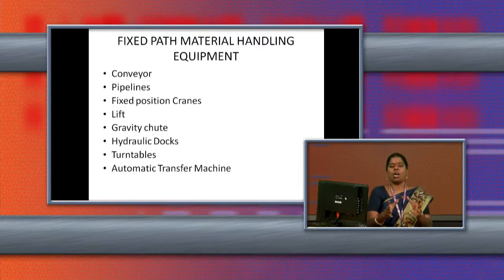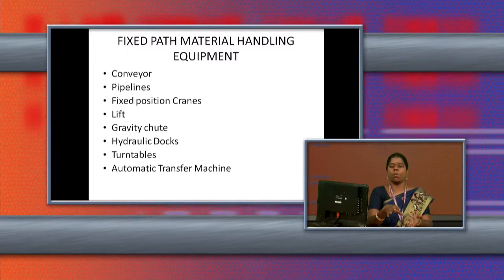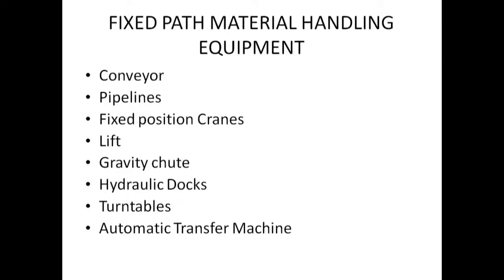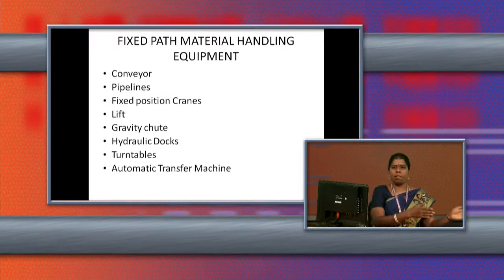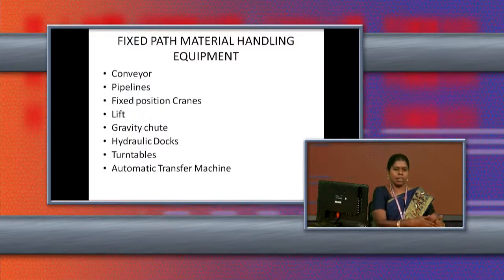Hydraulic docks use machinery to lift materials from the ground floor to the top floor. If we are not able to pull the materials manually, we can use hydraulic docks — machinery that pulls materials from the ground floor to the top floor. Next is turn tables. Turn tables are used when a conveyor is carrying materials in a continuous path and the materials need to be turned in another direction. The straight flow of materials is turned with the help of turn tables, which are fixed in a particular place.